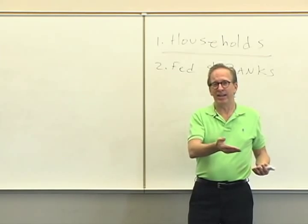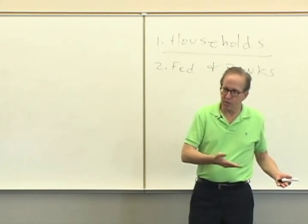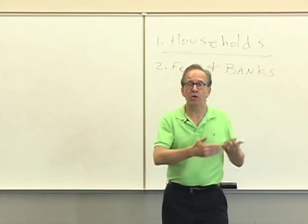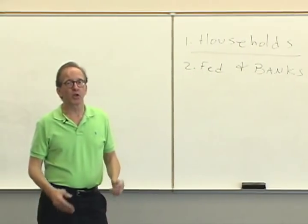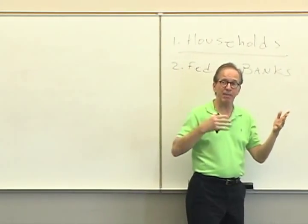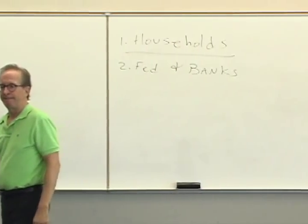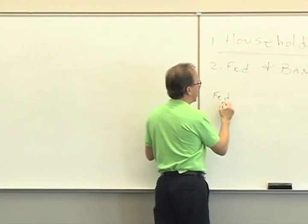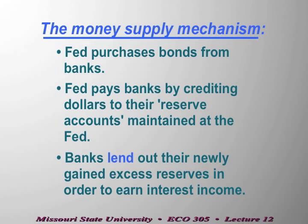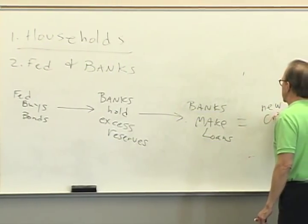Before long, those bankers are sitting with funds received from the Federal Reserve — not earning interest — and they say: we ought to put this money to work. The way they normally do that is by making loans to businesses. So: the Fed buys bonds from banks; the banks hold excess reserves from the bond sales that the Federal Reserve credited to their reserve account; and then the banks make loans — and those loans are new credit supply.